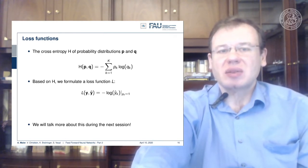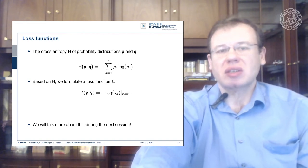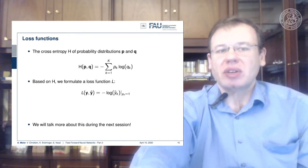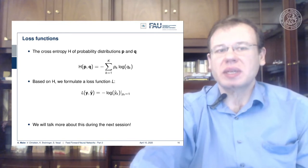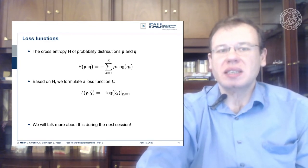The loss function is a function that tells you how good the prediction of a network is. A very typical one is the cross-entropy loss.